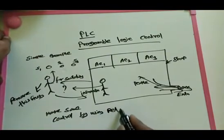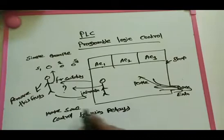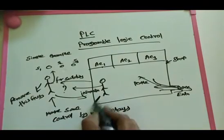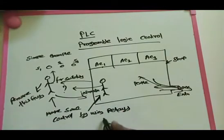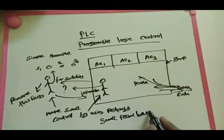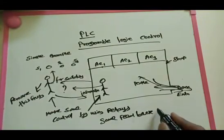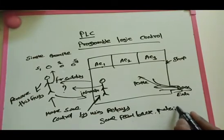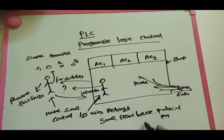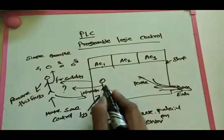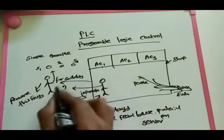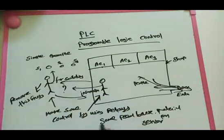How will this operate using PLC? First, we need to take information from the shopping mall. How do we get that information? We need to install some sensors — temperature sensors — inside the shopping mall. After that we get a feedback signal from the shopping mall, then we operate AC1, AC2, and AC3. Now I will show you how to remove the two persons and replace them with PLC, with simple connections.